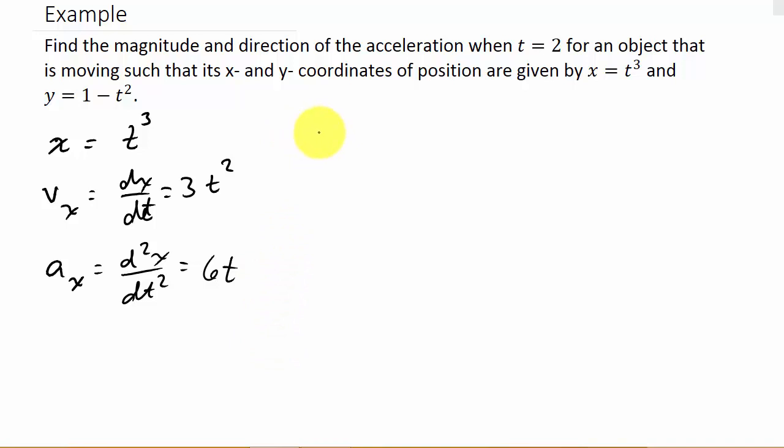And the second derivative of y—y is 1 - t². So v_y for velocity would be -2t, that's the first derivative. And then a_y, the second derivative of y, would just be -2.